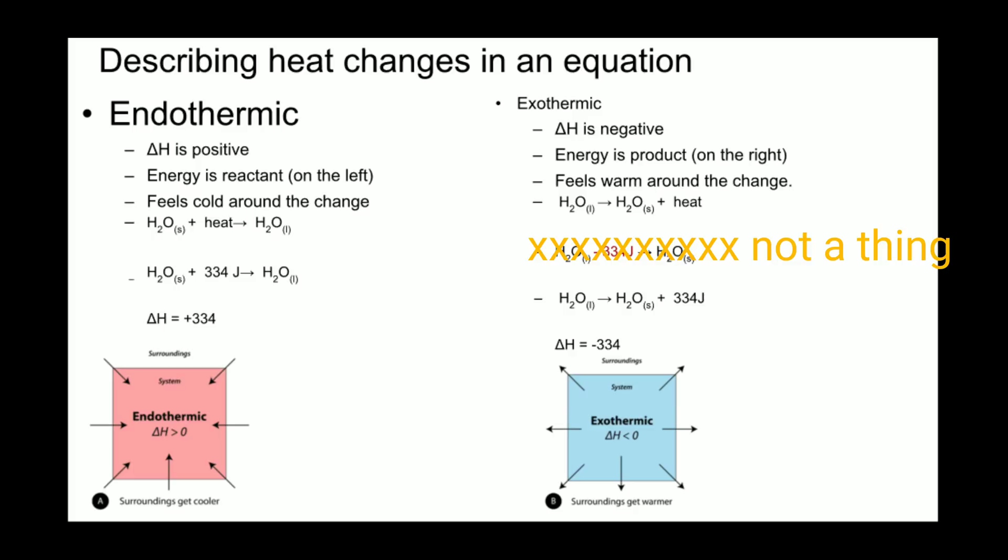Just like endothermic processes, we can write the word heat after the arrow. We can write the exact amount of heat, 334 joules. And the placement of the heat term, whether it is the word heat or the exact quantity of joules, indicates that this process is exothermic.